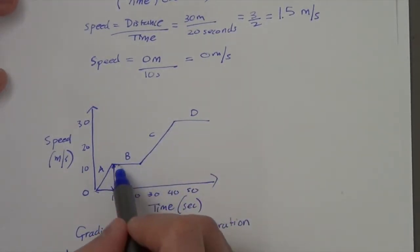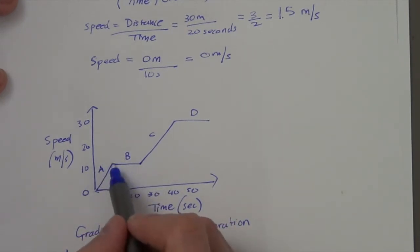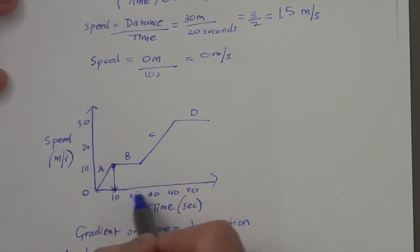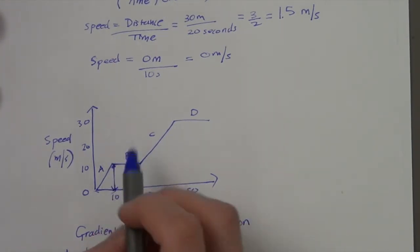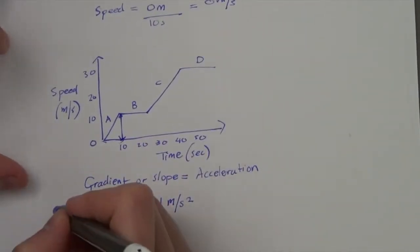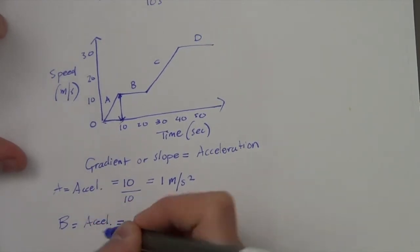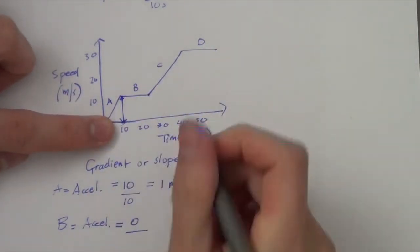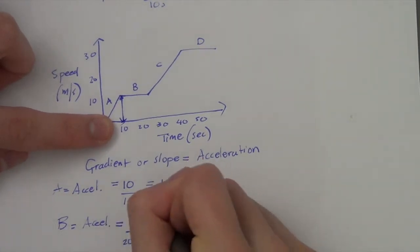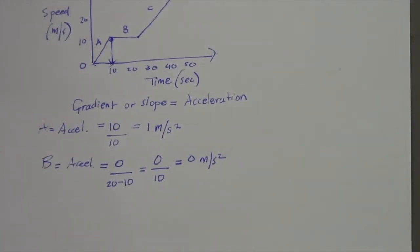Let's do line B. What's the change in the speed axis? It's sticking at 10 metres per second for about 10 seconds, so it's not changing speed at all — it's not accelerating. We can see from the graph that the acceleration is 0. In equation form: 0 divided by 20 minus 10, which is 0 over 10, giving 0 metres per second squared.